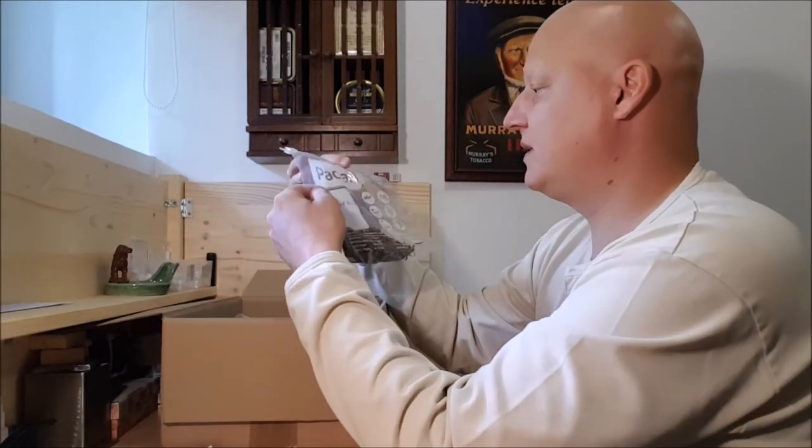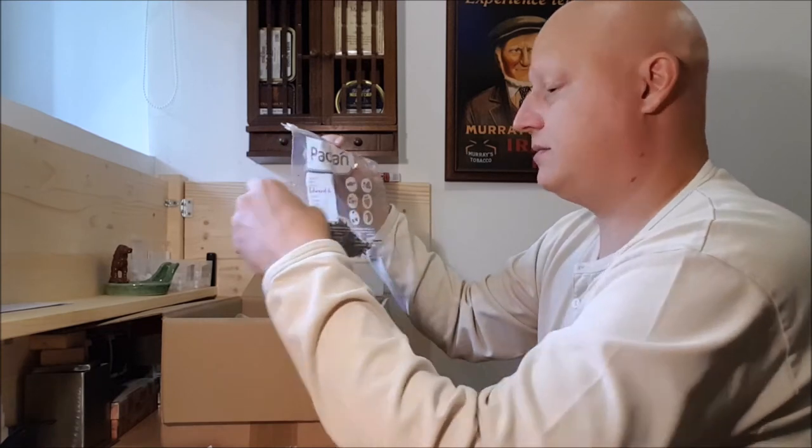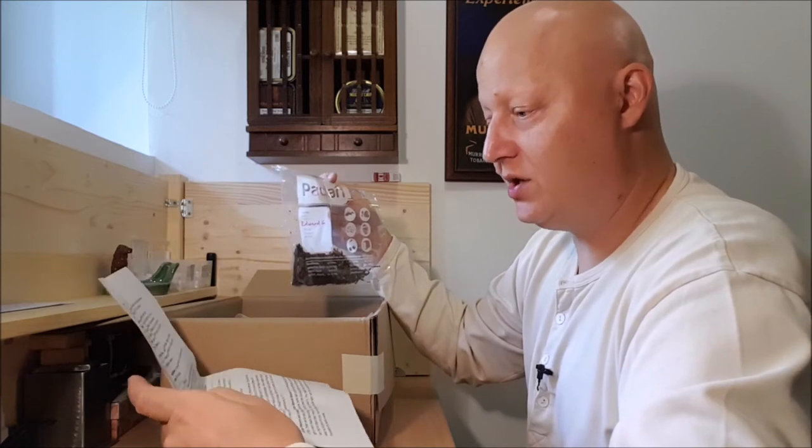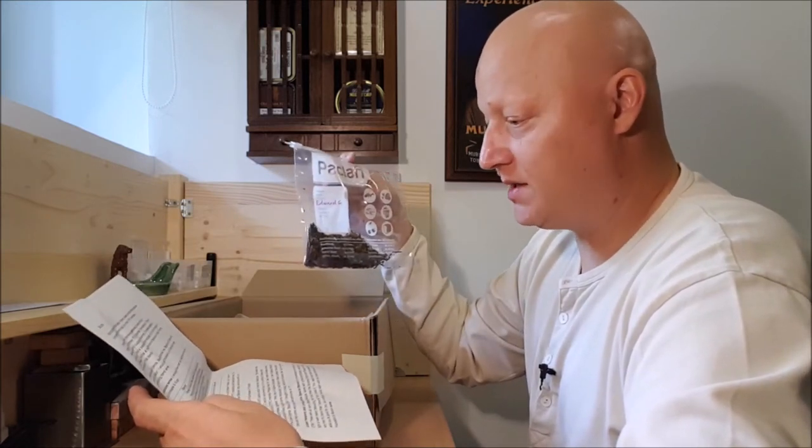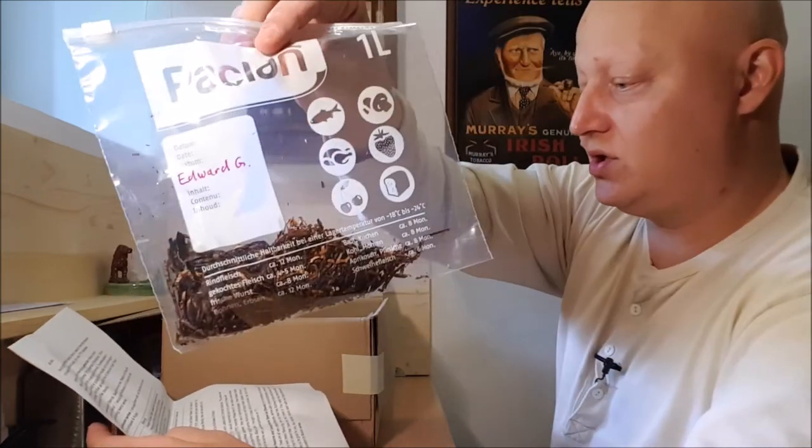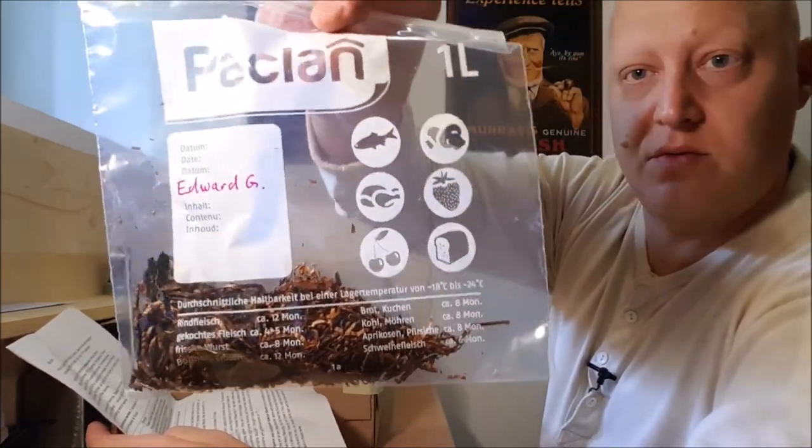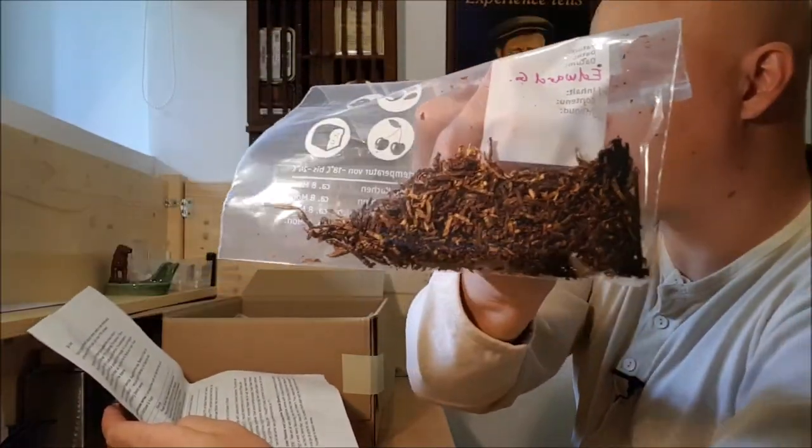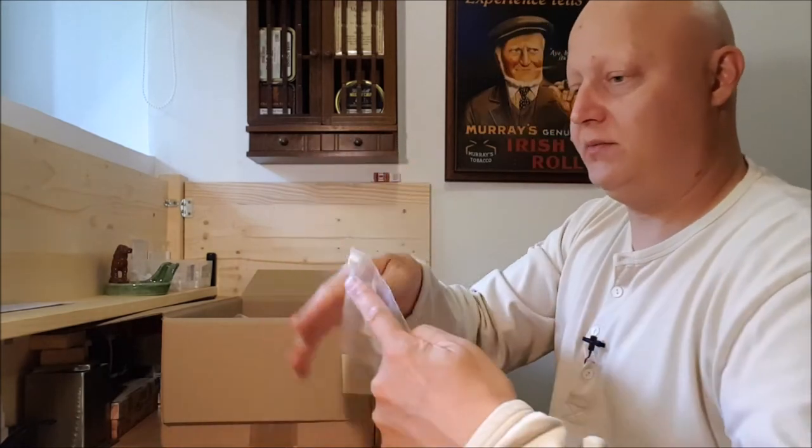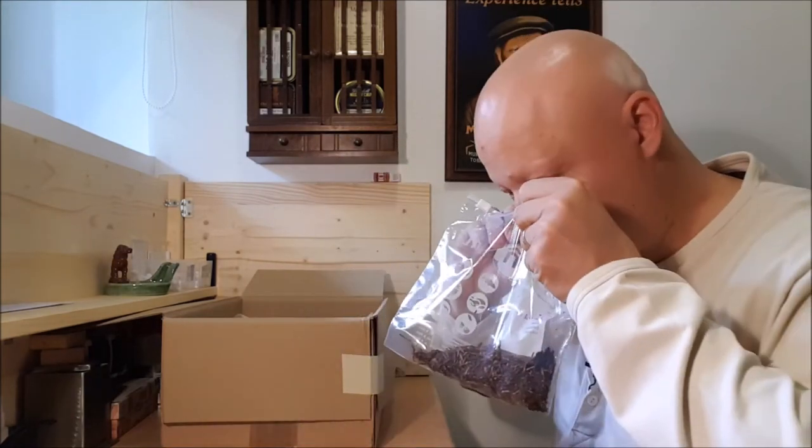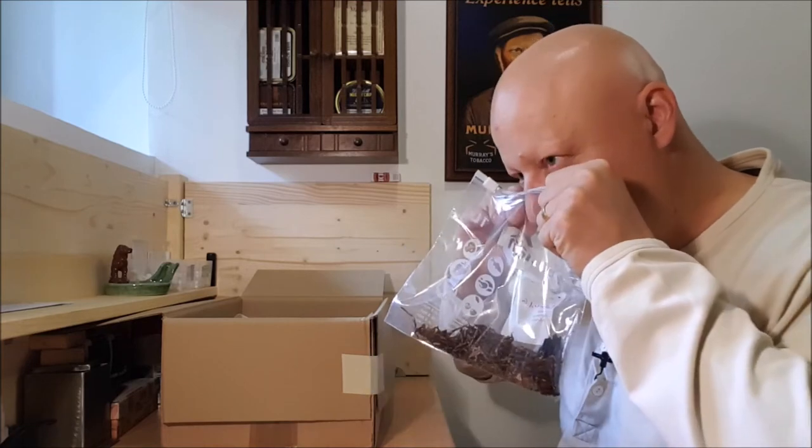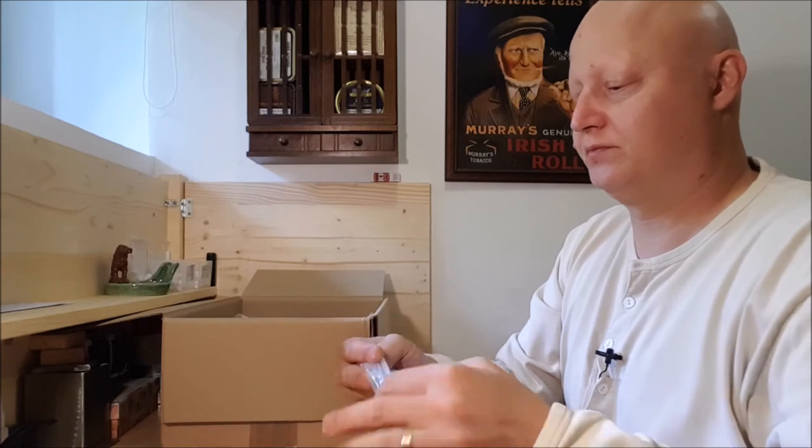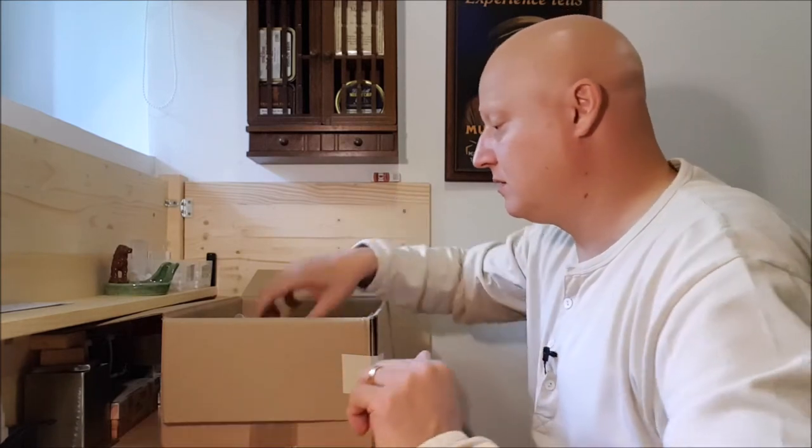So let's continue. First one is Edward G, ready wrapped flake, pressed red Virginias with some Perique and brown Virginia and a hint of Kentucky. Okay, let me just quickly sniff this. Nice smell. Thank you.